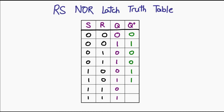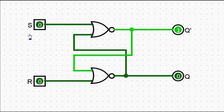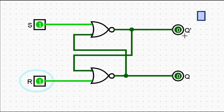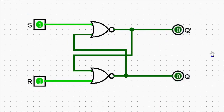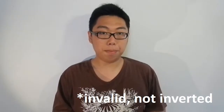Formally, if both S and R are one at the same time, this is actually an invalid input, and as a result you cannot expect your RS latch to perform normally. If we go back to our simulation and set both R and S to one, notice now that both Q and Q-not are both zero. So Q-inverted is no longer an inversion of Q because they end up both being zero — that's what we mean by an invalid output, when things that were meant to go a certain way no longer work that way.